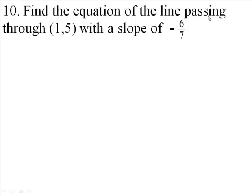Number 10, find the equation of the line passing through 1, 5, that's a point here, and then it has a slope of negative 6 7ths. Now we're saying it has a slope of minus 6 7ths, we're saying m is minus 6 over 7, and we have a formula for m which says negative A over B.